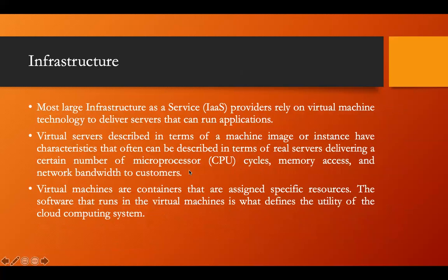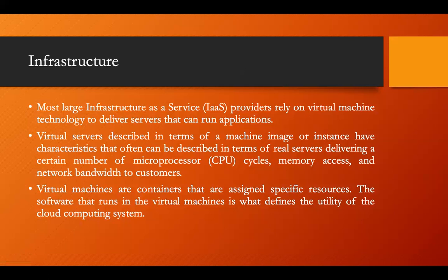The next concept related to the cloud computing stack is infrastructure, which is the hardware part of the cloud. Most large Infrastructure as a Service providers rely on virtual machine technology to deliver servers that can run applications. For IaaS, we need virtualization. When we provision infrastructure — say a virtual machine with 1 GB of RAM, 40 GB of hard drive, and two CPU cores — that infrastructure is provisioned through virtualization technology.